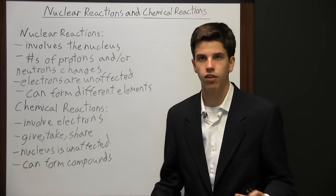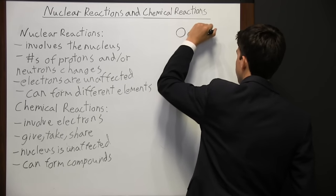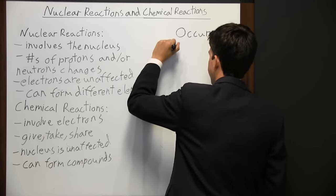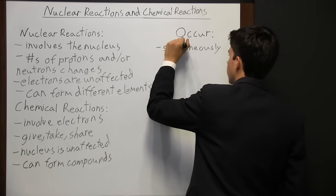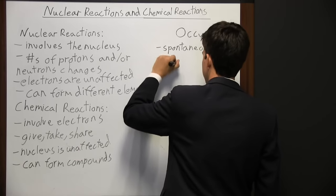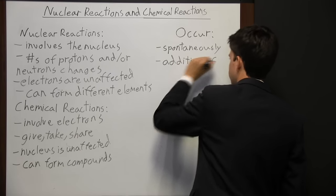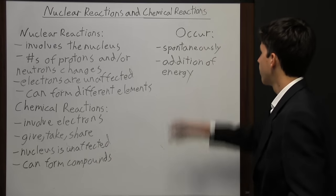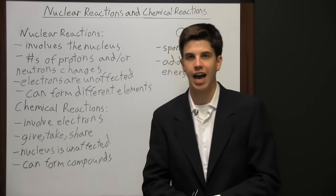The main similarity between nuclear and chemical reactions is how they occur: both can occur spontaneously, or they can occur with the addition of energy. So while there are many differences, both types of reactions come about in the same way — either spontaneously or with the addition of energy.